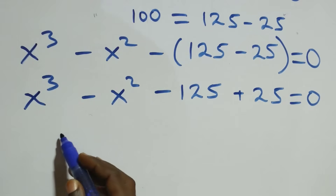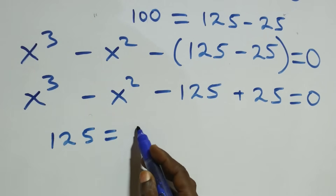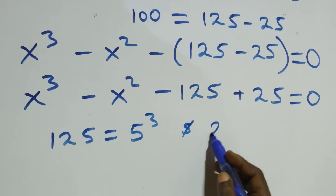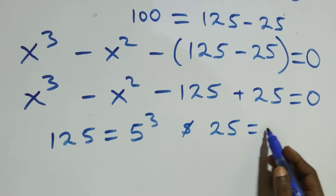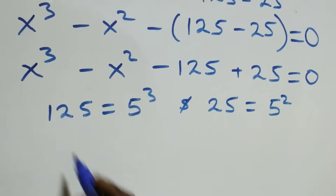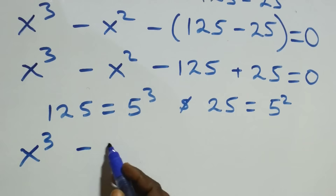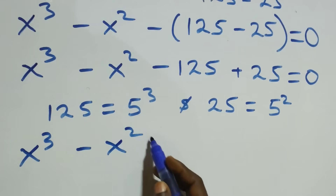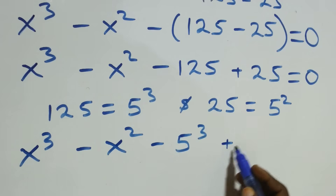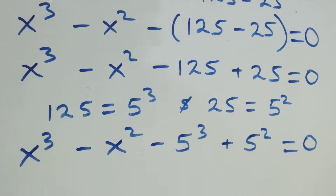We can write 125 as 5 times 5 times 5, which is 5 cubed, and also 25 as 5 times 5, which is 5 squared. Then this equation becomes x cubed minus x squared minus 5 cubed plus 5 squared equals to zero.